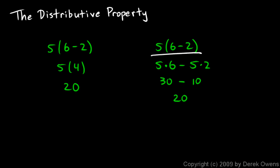Being able to distribute like this is very important. And at this point, you might ask, why? Why do we need to do this? Isn't it just easier to do what's in parentheses first and then multiply? And the answer is yes, that's easier if we're working with simple numbers like this. But a lot of times in algebra, we're working with variables. And being able to manipulate expressions with variables is very important.